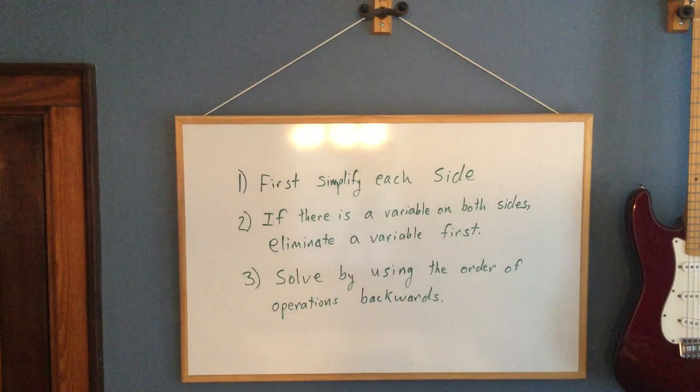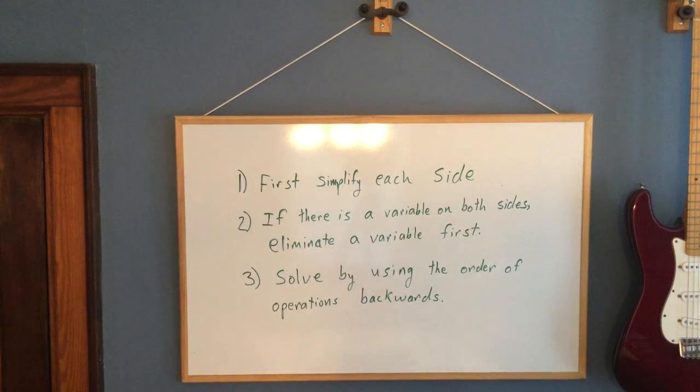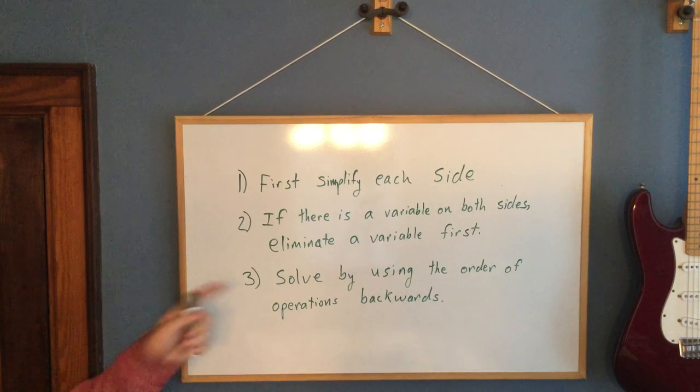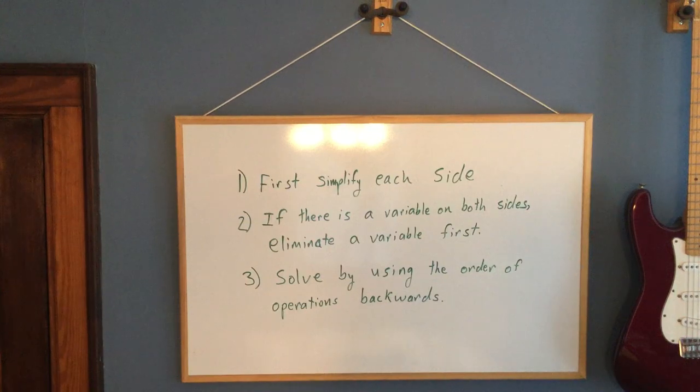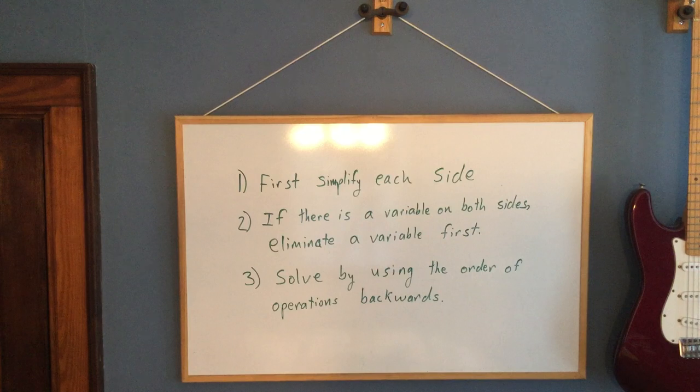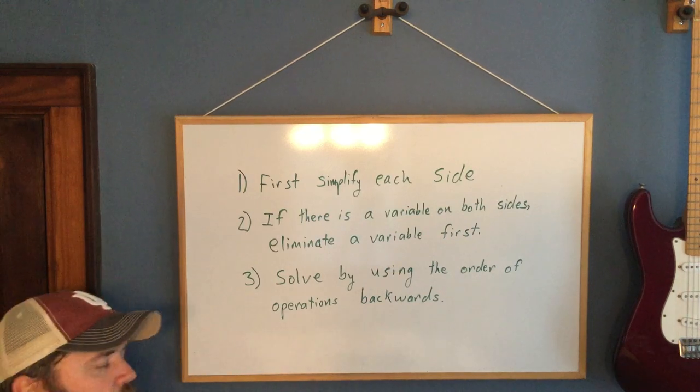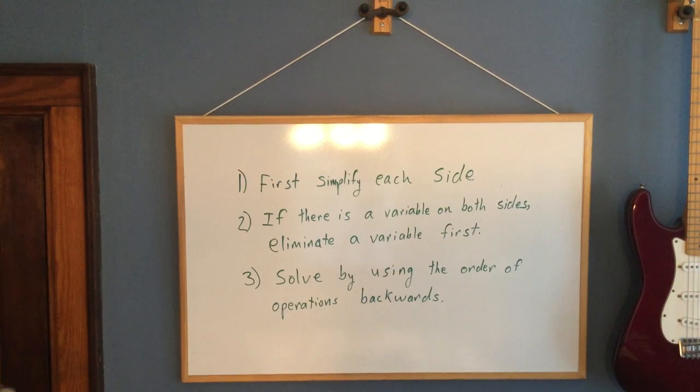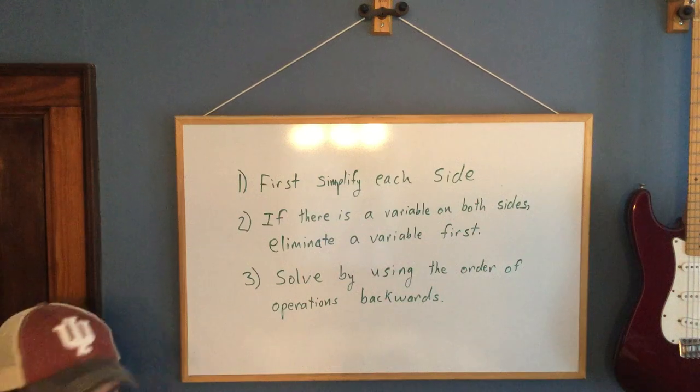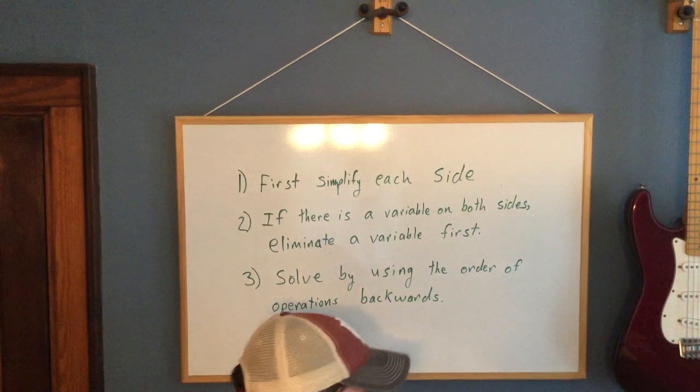Remember, when you go to solve an equation, first simplify each side. As you simplify, you will follow the order of operations. If there's a variable on both sides, my suggestion is to eliminate a variable first. Every time today, there'll be a variable on both sides. And lastly, once it's simplified, then solve. This time, use the order of operations backwards, so get rid of addition or subtraction, then get rid of multiplication or division.